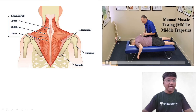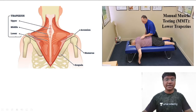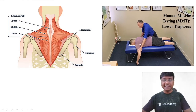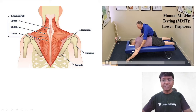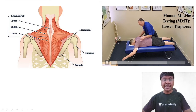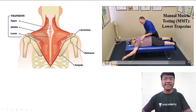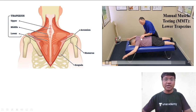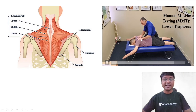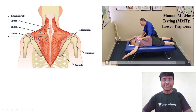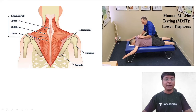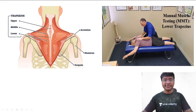To test the lower part of the trapezius, again in the prone position, the patient is asked to abduct the hands up to 135 degrees and retract the shoulders. The doctor applies resistance, and if the individual is able to resist, the lower part of the trapezius is intact.